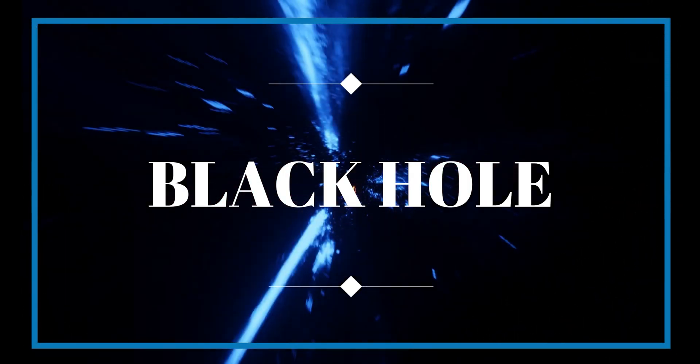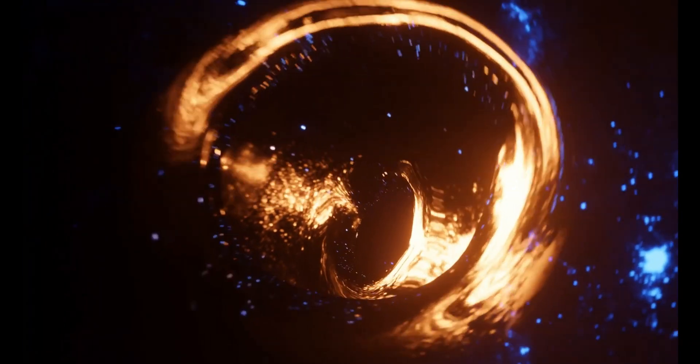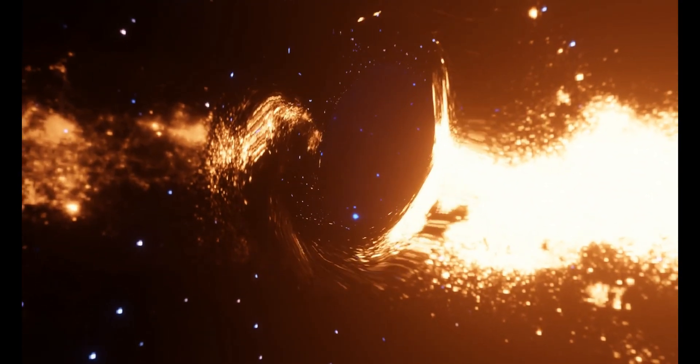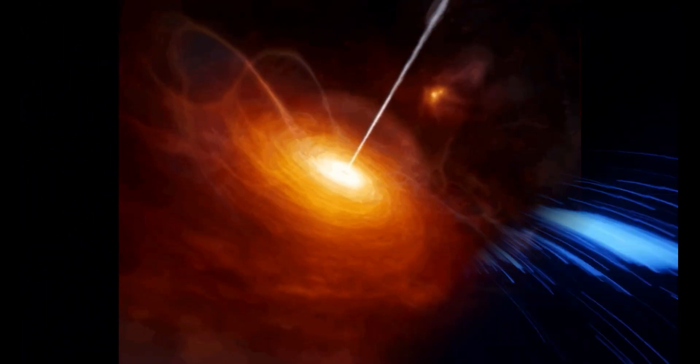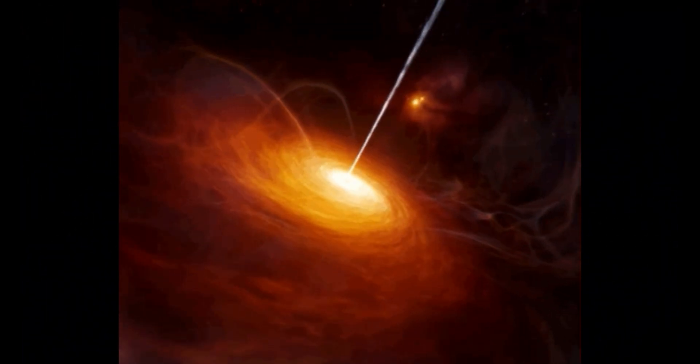Let's start with black holes. These are some of the most extreme objects in the universe, with gravity so strong that not even light can escape their grasp. But how do they form? It all starts with a massive star, many times larger than our sun, that has reached the end of its life.